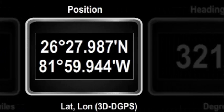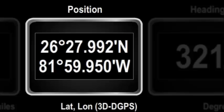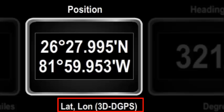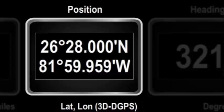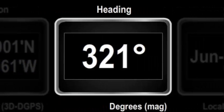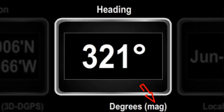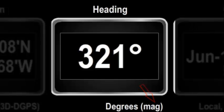Digital displays can be used to display latitude and longitude. Here the LED has no meaning so it is not displayed. The units field at the bottom right is extended to show the quality of the GPS fix — this example shows a 3D differential GPS fix. If the digital display is used to show a compass bearing such as heading, the units field will show whether the bearing is relative to true or magnetic north.